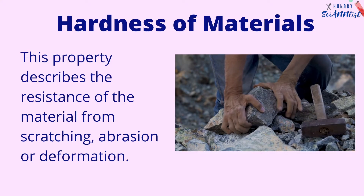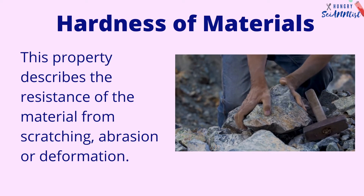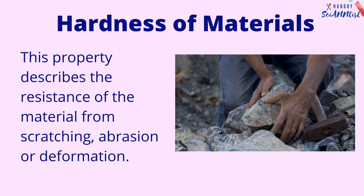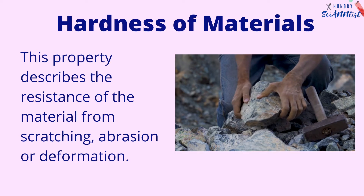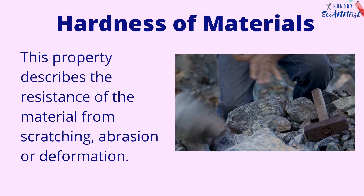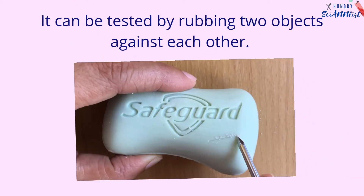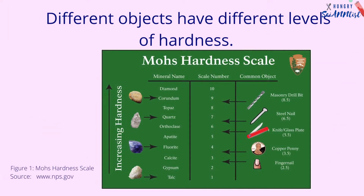What is hardness of materials? This property describes the resistance of the material from scratching, abrasion, and deformation. It can be tested by rubbing two objects against each other. Different objects have different levels of hardness.